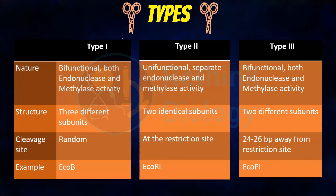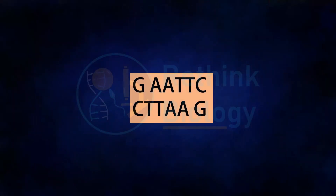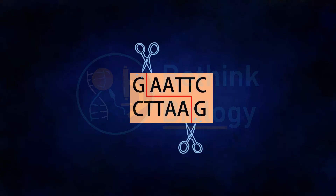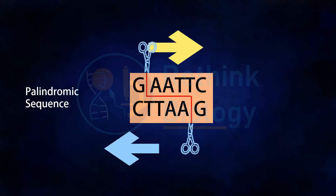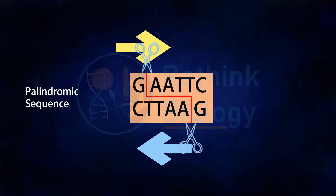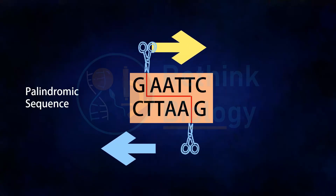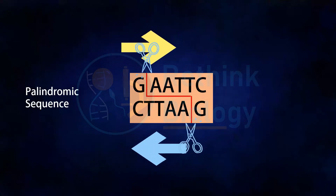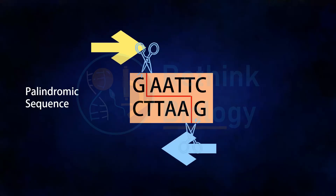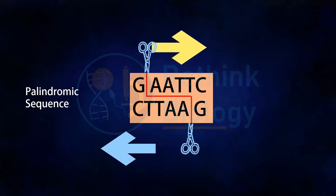Most of these recognition sites contain palindromic sequences within the DNA duplex. Palindromic sequences are those sequences which read the same from both directions — that means the two strands of DNA carry the same nucleotide sequence but just in the opposite direction, like this.